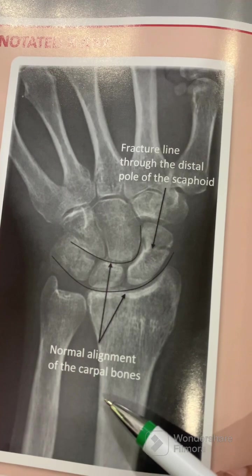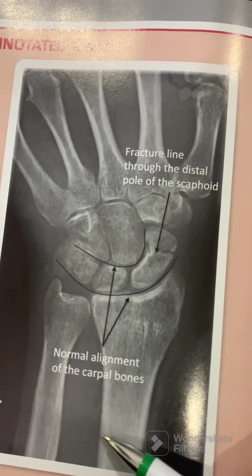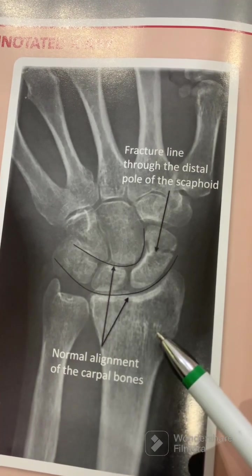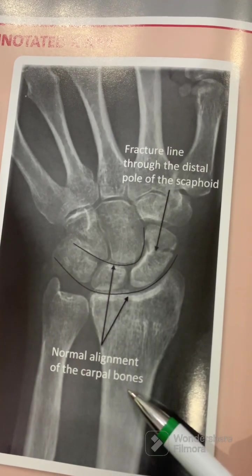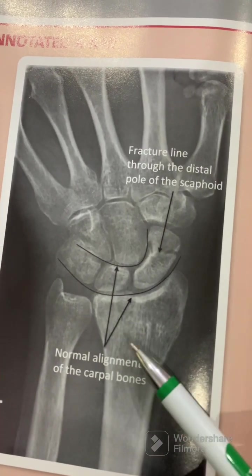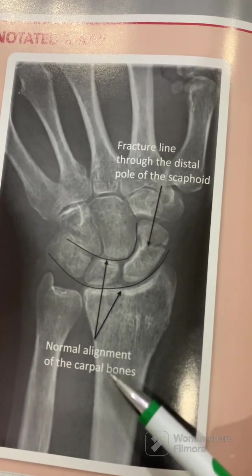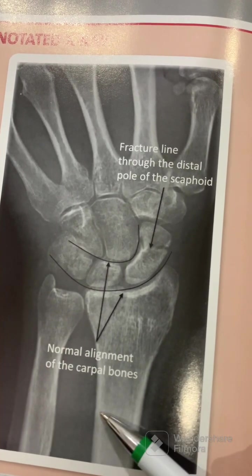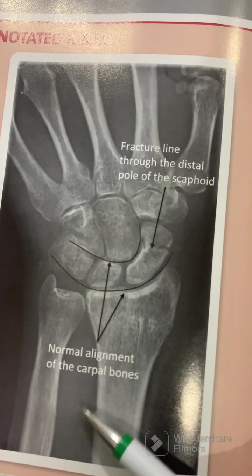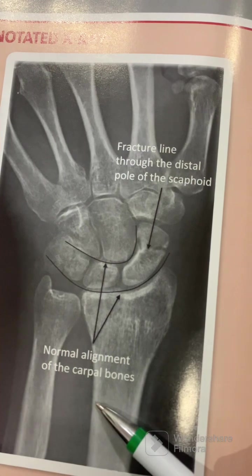No other views are visible, although I would like to view the other x-rays of the wrist and/or scaphoid series. Normal alignment of the carpal and metacarpal bones is evident on the single view. The bone shows normal density and there are no areas of lucency or sclerosis.